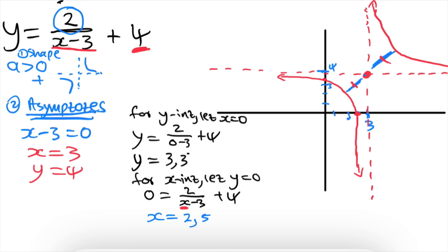I normally start with arrows approaching the asymptotes to show the graph never cuts them, then connect and curve based on the spacing. To recap: step one, determine the shape; step two, get the asymptotes from P and Q; step three, get the y-intercept; step four, get the x-intercept. You need those four things to draw a hyperbolic function.